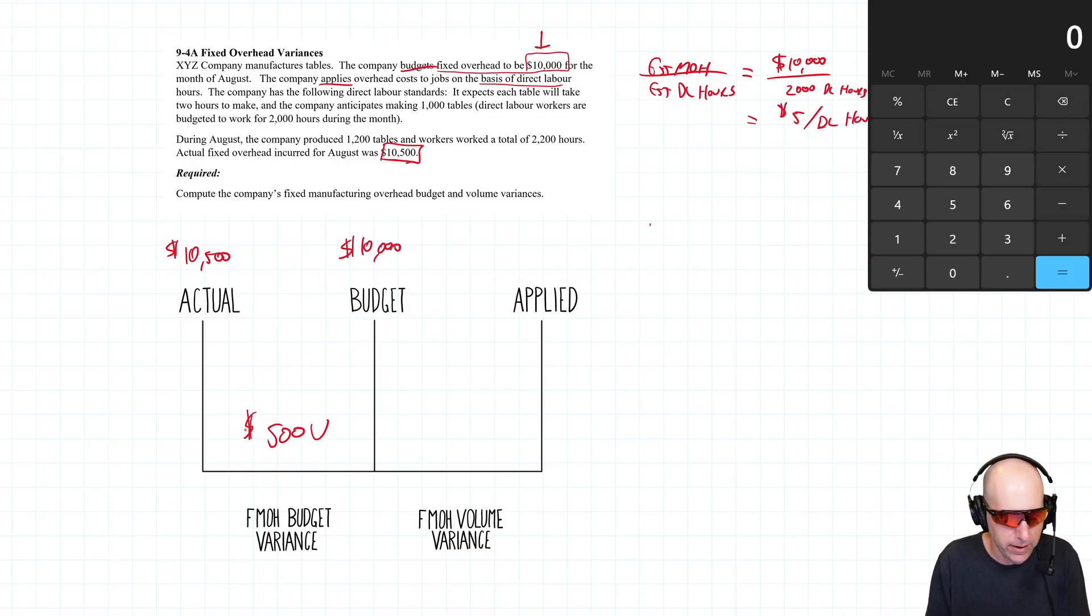This is an unfavorable budget variance - I blew the budget for fixed overhead by $500. That's what that's saying. The applied piece, I want to explain it a bit, and actually I want to explain volume variance. Big picture: volume variance just means if you have a fixed cost and you make a lot more product than you were planning to, your fixed cost spreads out over more products and that's good. If you make fewer products, your fixed cost doesn't spread out as much and that's bad.